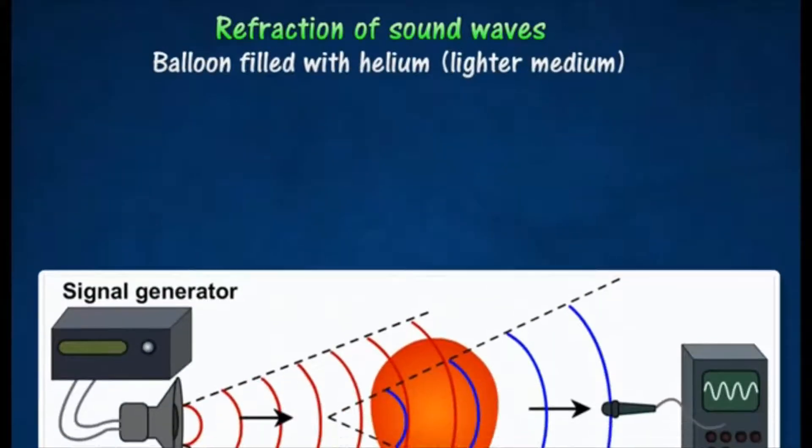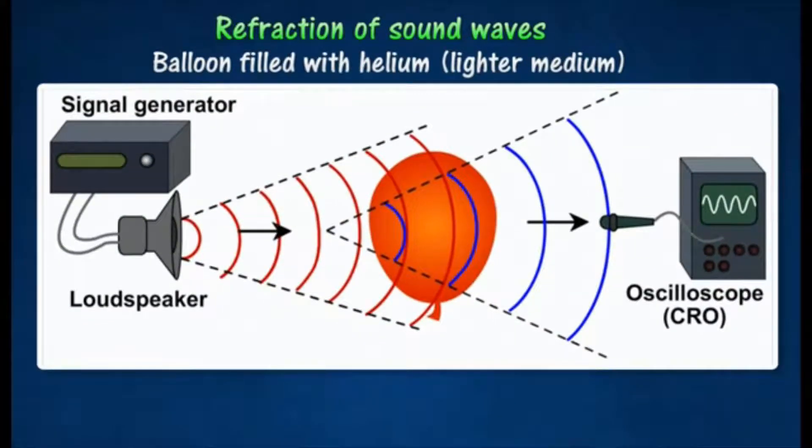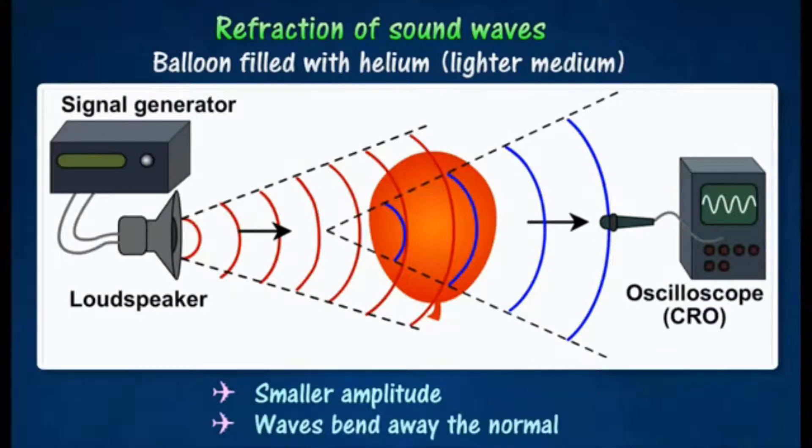The experiment is repeated using a balloon filled with helium gas, which is less dense than air. The amplitude recorded by the oscilloscope is smaller. This is because the sound waves bend away from the normal, since the waves travel from denser to a less dense medium.